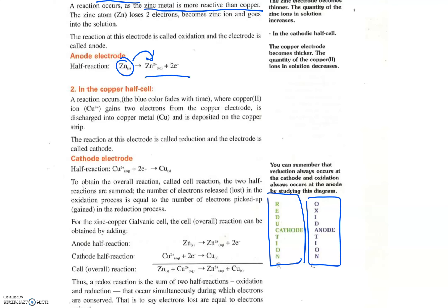The blue color fades. Why? The blue color is coming from the ions Cu2+. These ions will become the copper metal Cu and will deposit on the copper strip. So Cu2+ plus two electrons will become Cu.